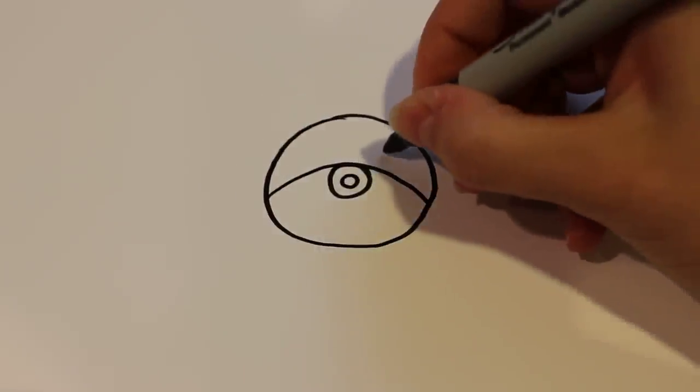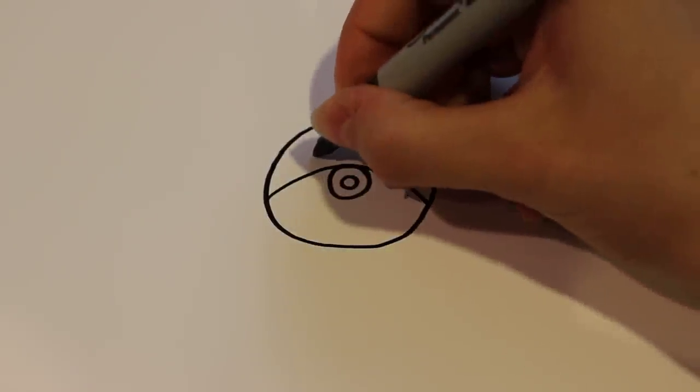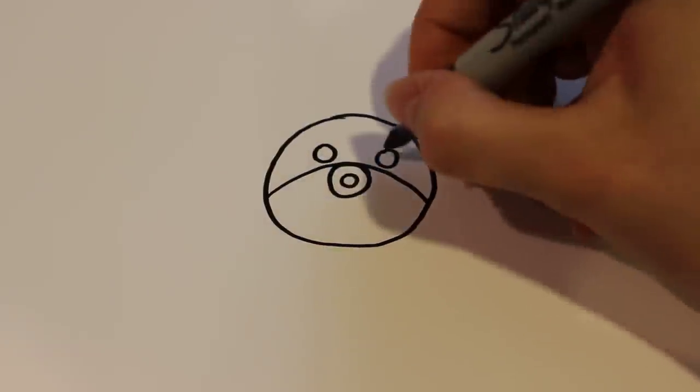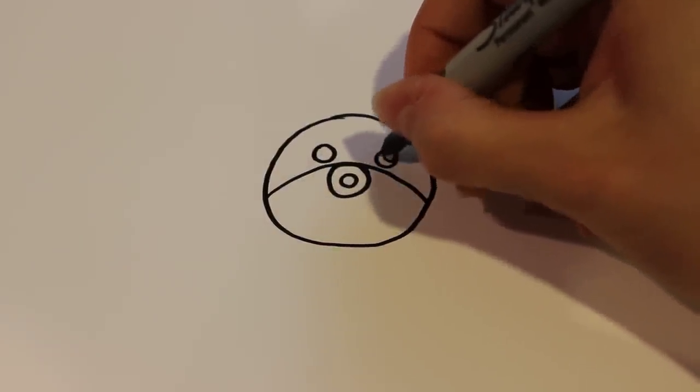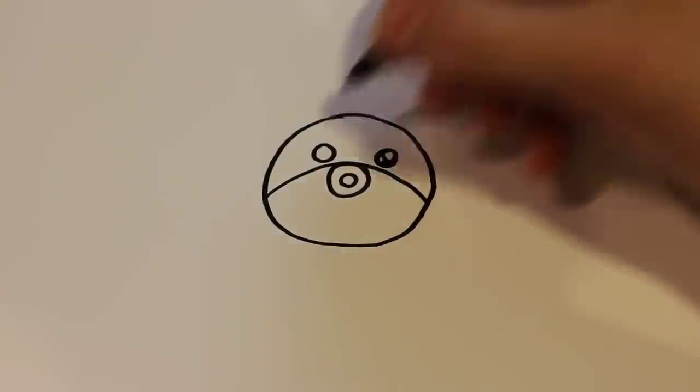And then for the eyes I'm going to draw two circles on either side of the mouth. And then my usual big circle, small circle, and coloring the rest in like that.